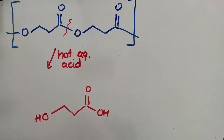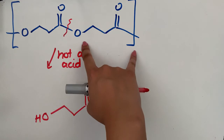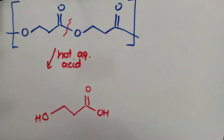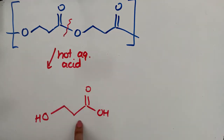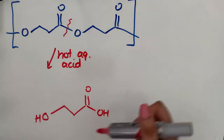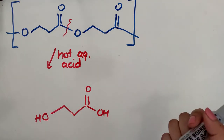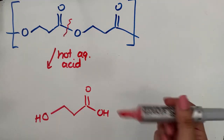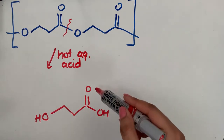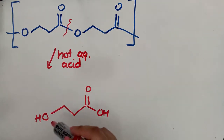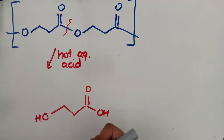And at the other end, we form the alcohol. As you can see, this is actually two repeat units drawn here. This polyester is made from just one monomer with a different functional group at either end. So we've added water across that molecule, forming the carboxylic acid at this end and the alcohol at that end.